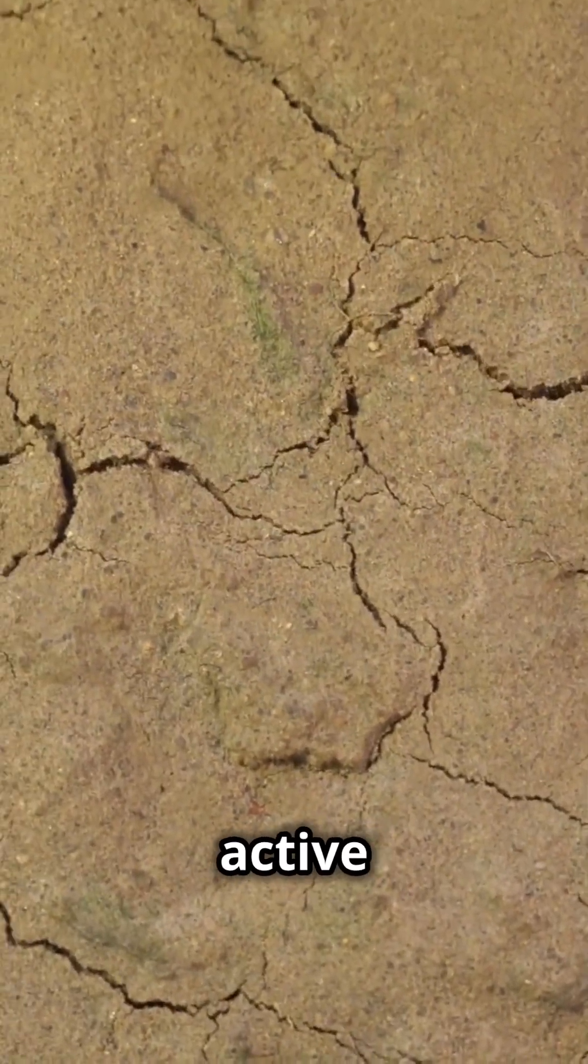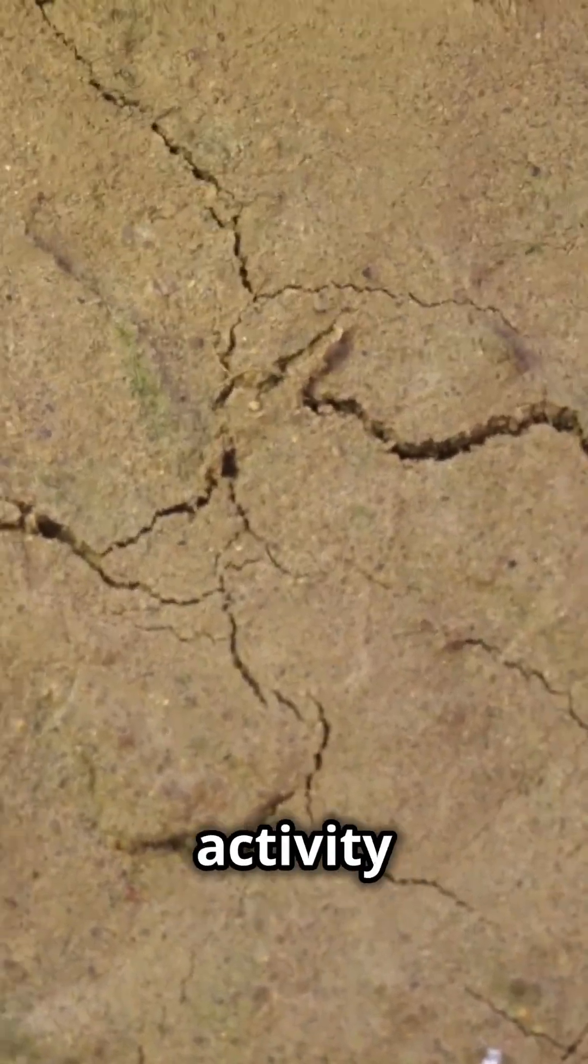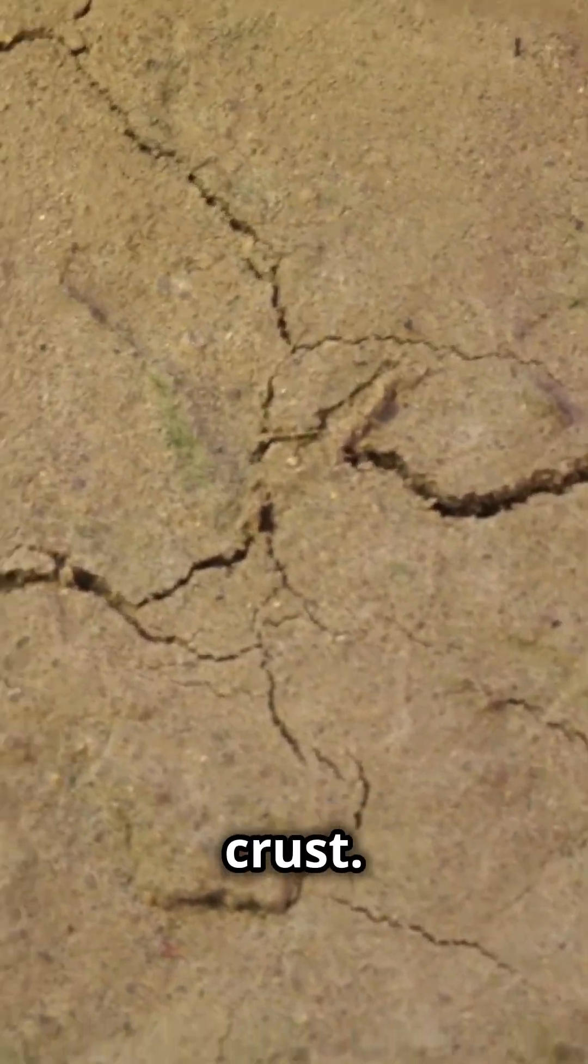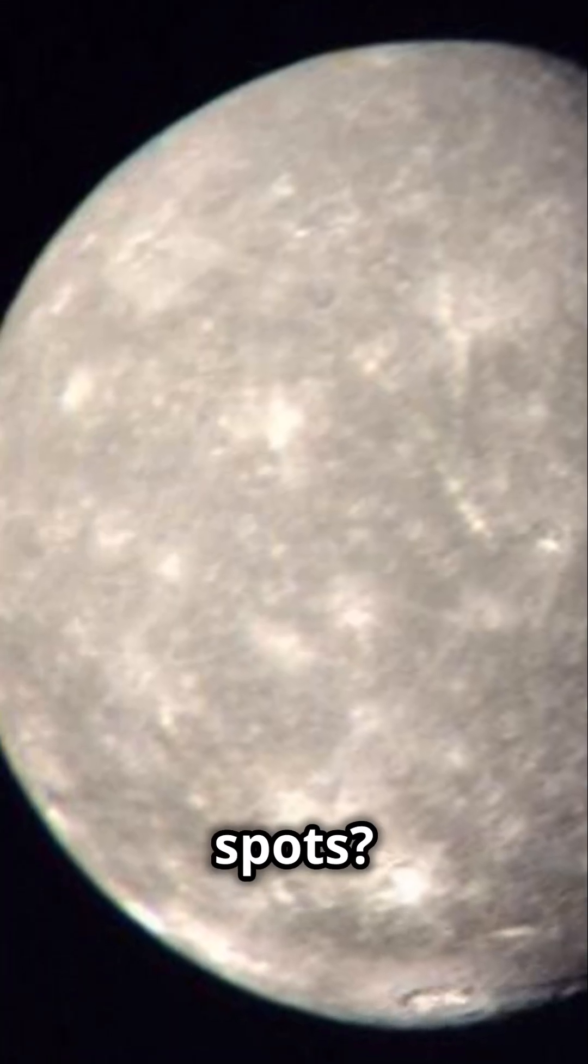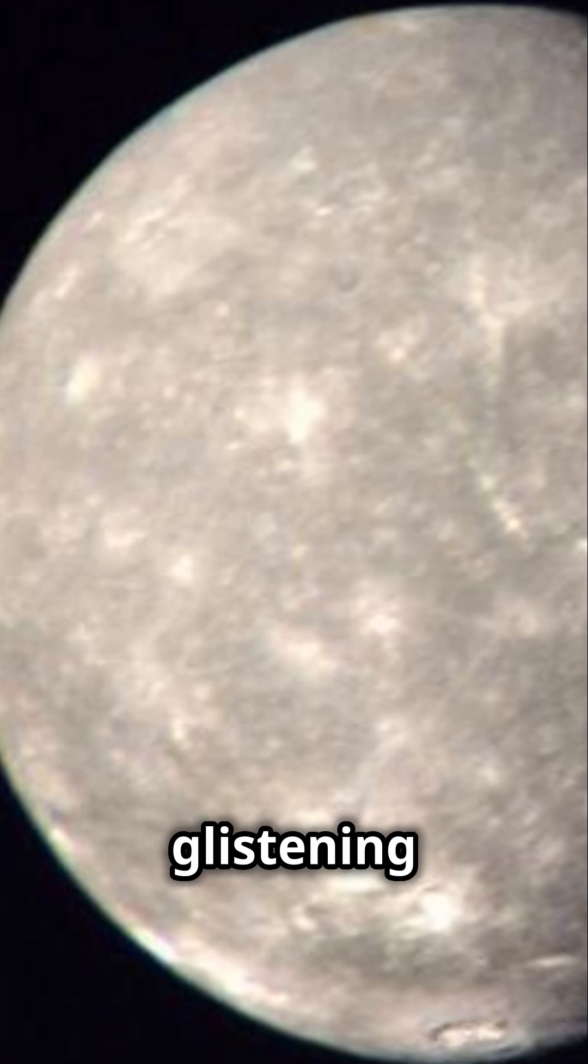These features hint at an active past, with tectonic activity cracking its crust. Oh, and those shiny spots? They might just be frost glistening in the sunlight.